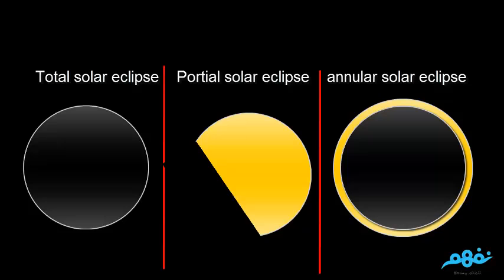The third type is the annular solar eclipse. This occurs when the moon comes to the higher part of its orbit from Earth, as it revolves around it in an oval orbit. The cone shadow does not reach the Earth's surface, so an annular solar eclipse is formed.